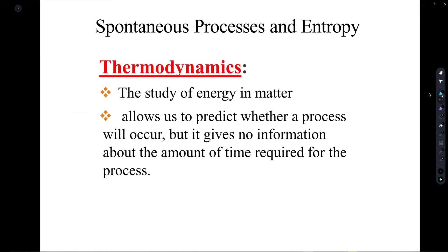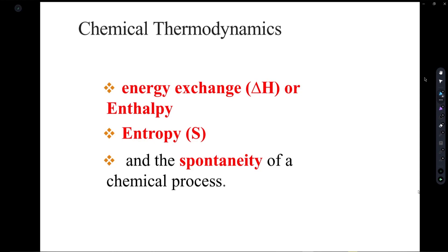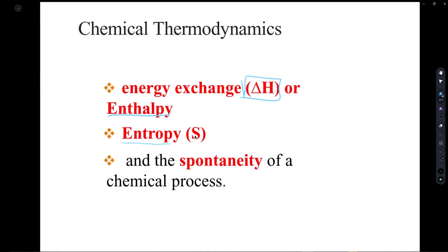Another huge part of this chapter is thermodynamics. Thermodynamics is the study of all energy in matter. It allows us to predict whether a process will occur, but keep in mind that thermodynamics is only interested in the start of the reaction and the end components. The three main terms you're going to be hearing throughout this chapter are enthalpy, which is the energy exchange denoted by the symbol delta H, entropy, which is defined as the amount of randomness denoted by the symbol S, and spontaneity, which we have already discussed.